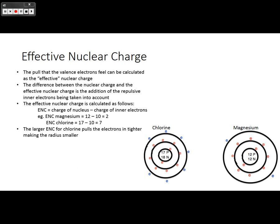Because of the larger ENC for chlorine, chlorine pulls those outer electrons in tighter, making the radius smaller. So this is one of the effects that you'll see when we talk about size of atoms.